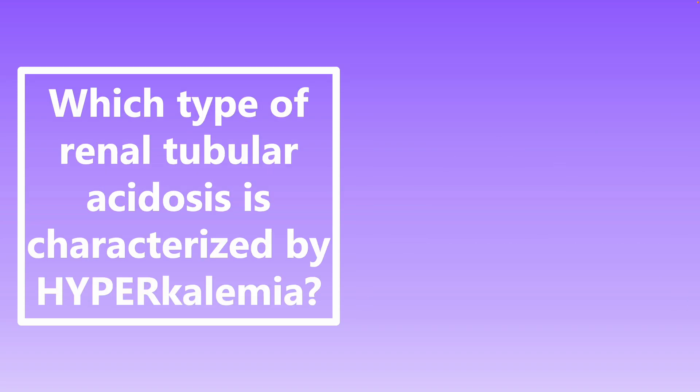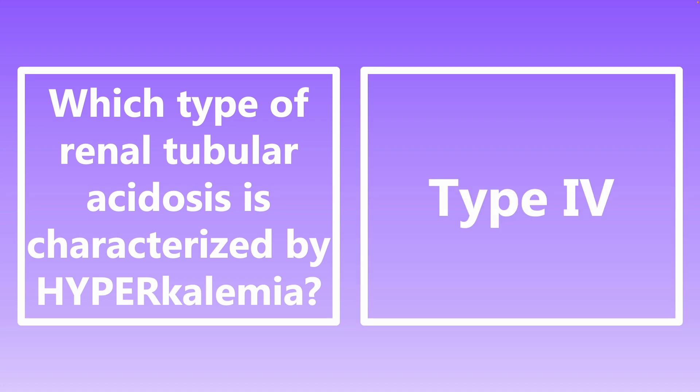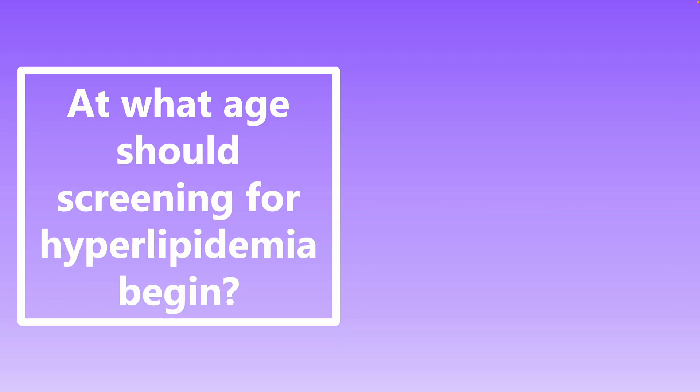Which type of renal tubular acidosis is characterized by hyperkalemia? This is Type 4. Type 4 renal tubular acidosis is characterized by decreased aldosterone production or decreased effectiveness of aldosterone, and as a result patients will have hyperkalemia.